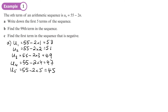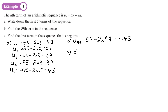Continuing, u5 = 55 − 2(5) = 45. So there are our first five terms. For the 99th term, the advantage of an nth term rule is that you can find any term without working out all the ones before it. u99 = 55 − 2(99) = 55 − 198 = negative 143.